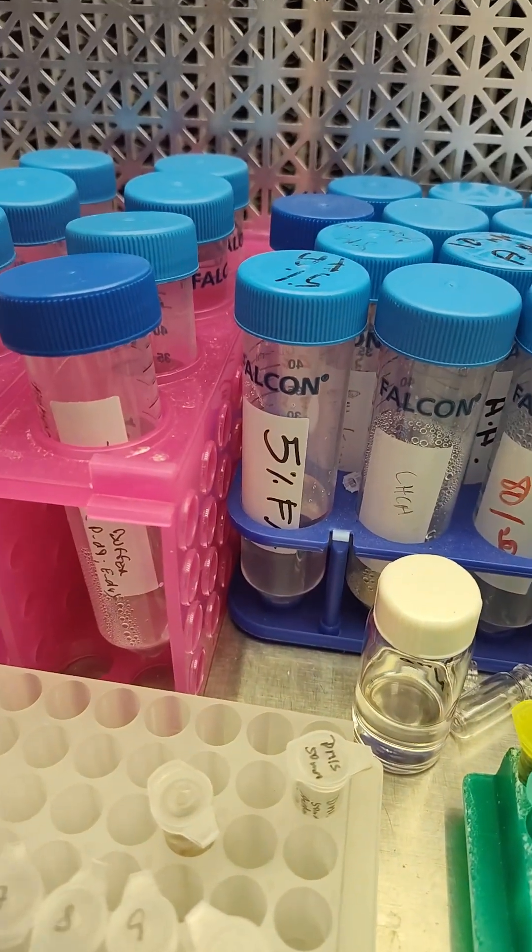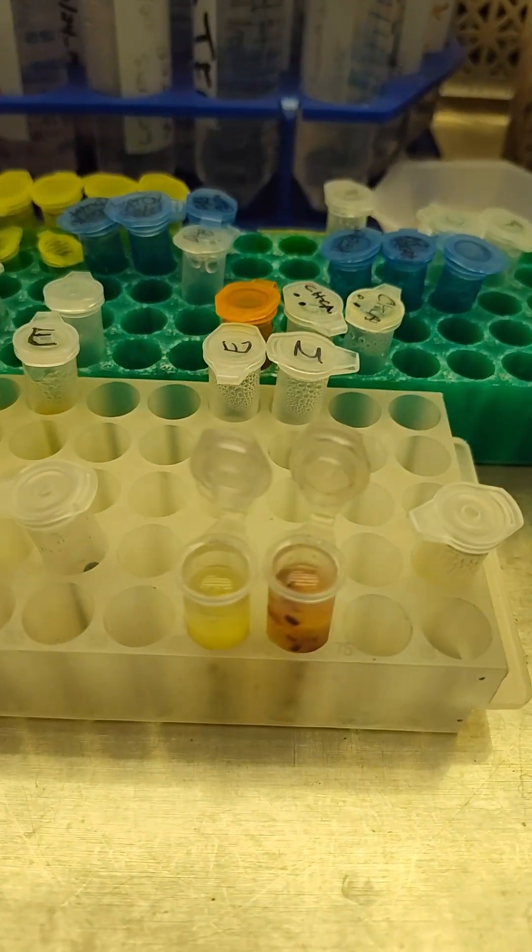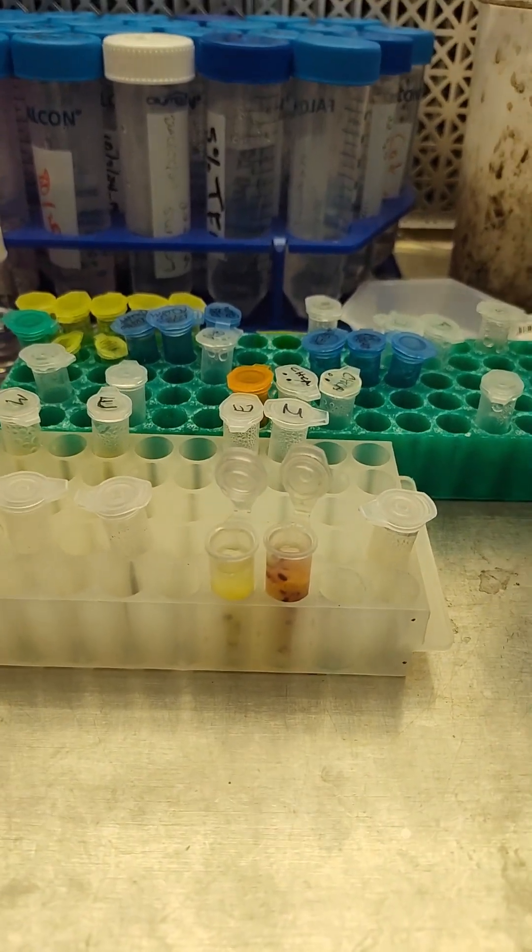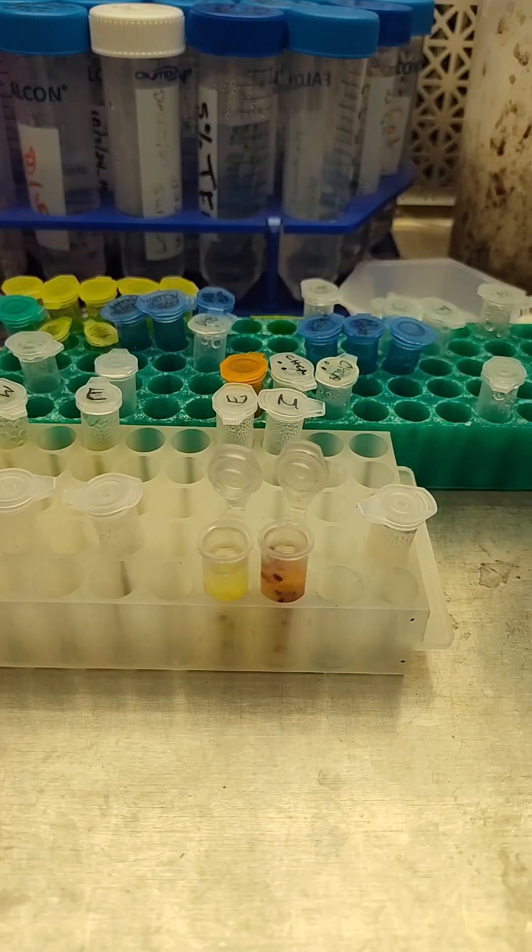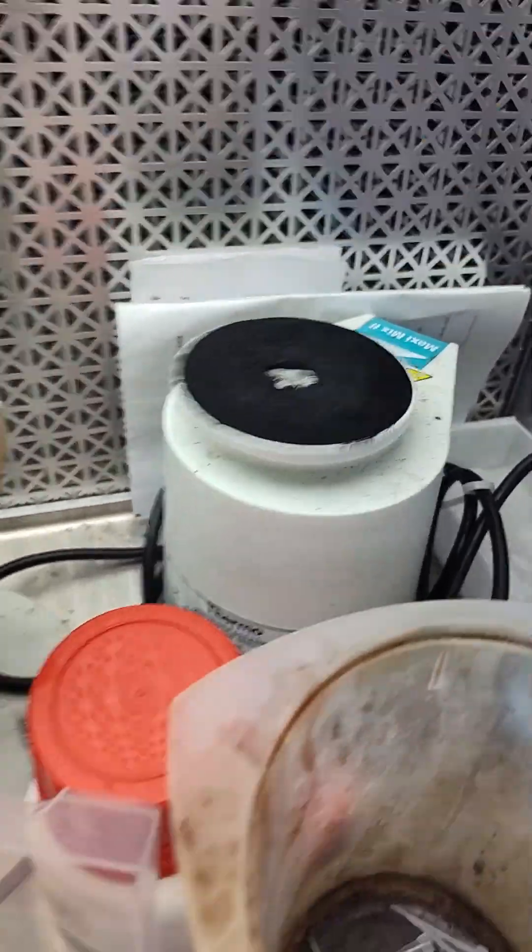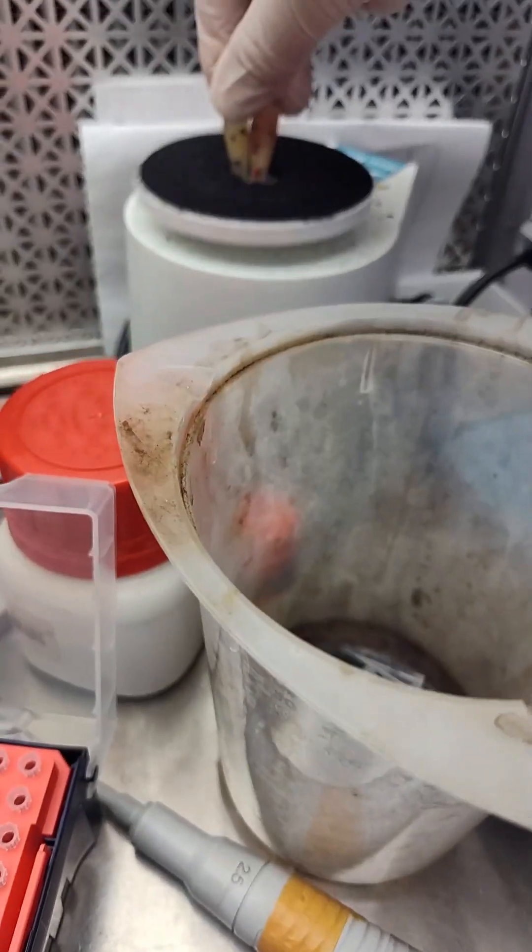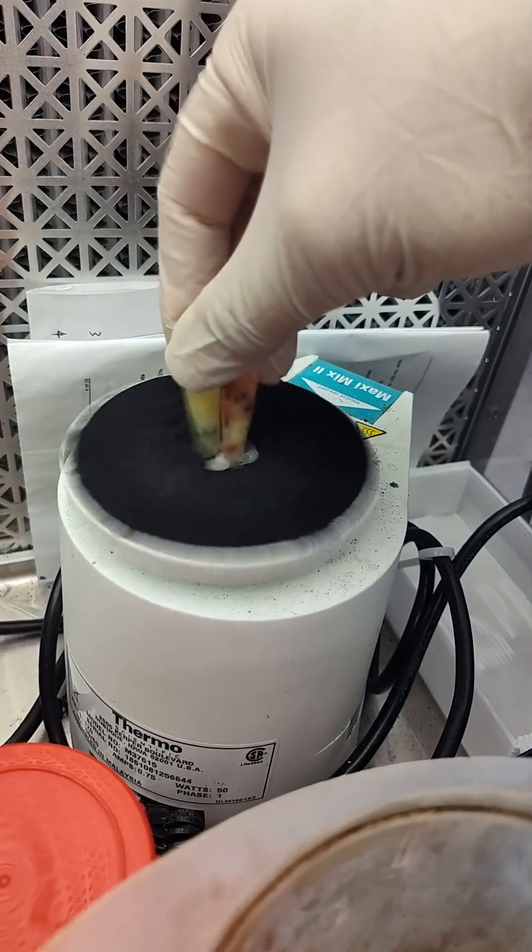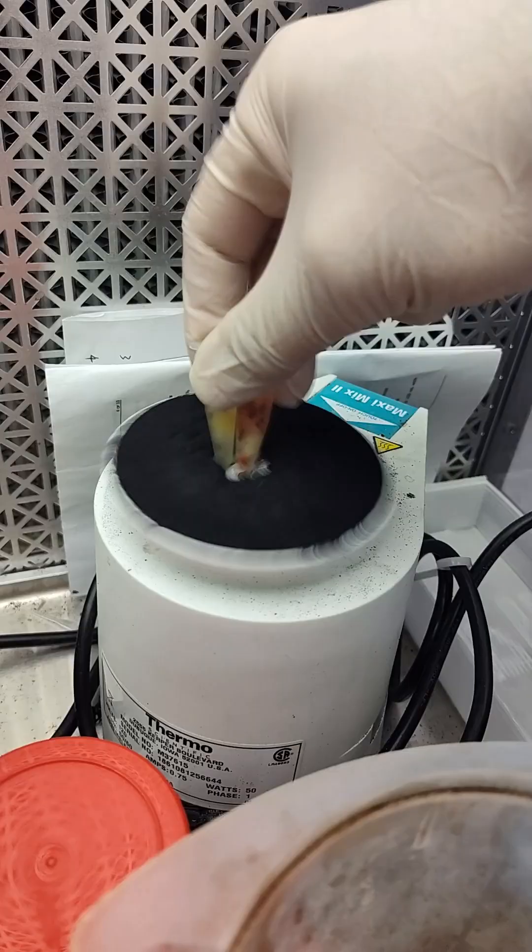You want to acidify it with this 5% formic acid because anthocyanin pigments are more stable at low pH, in acidic conditions, and we have to use formic acid on LC-MS. So now we're going to vortex these to try to get that formic acid mixed all the way down.